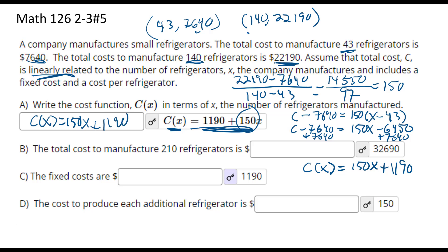What's the cost of 210? C of 210 is going to be 150 times 210 plus 1190. So 150 times 210 plus 1190, I get 32,690. Hey, it matches up with that.